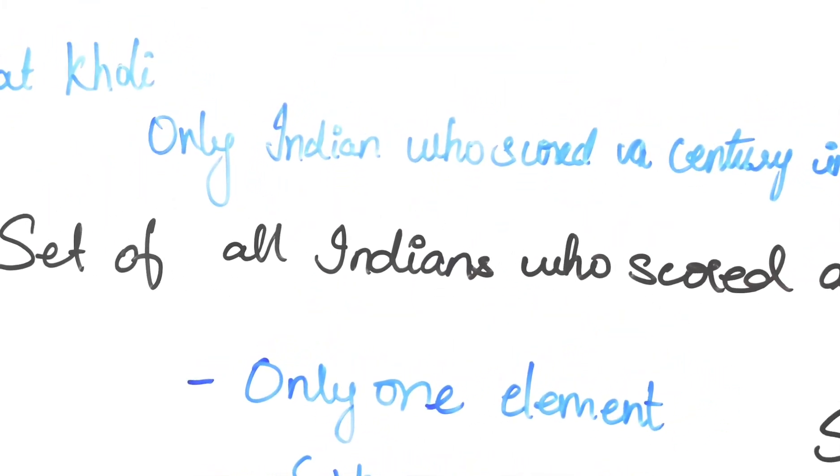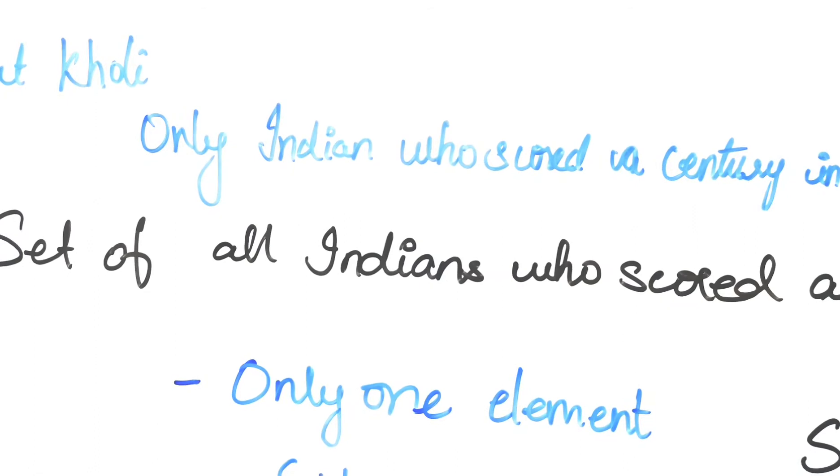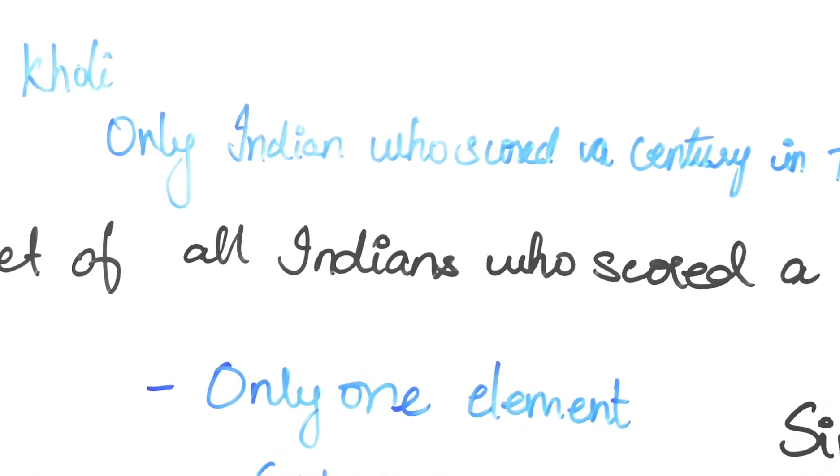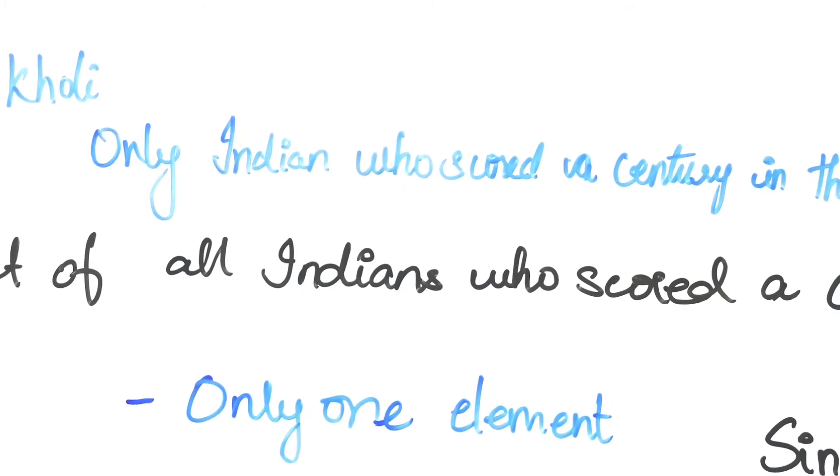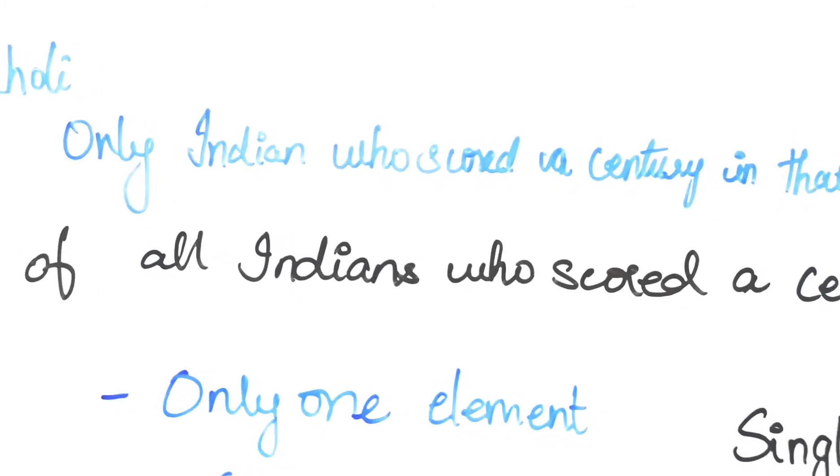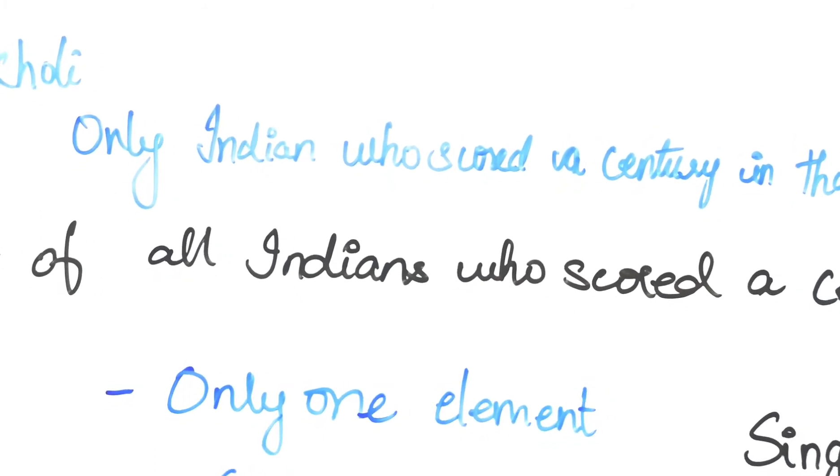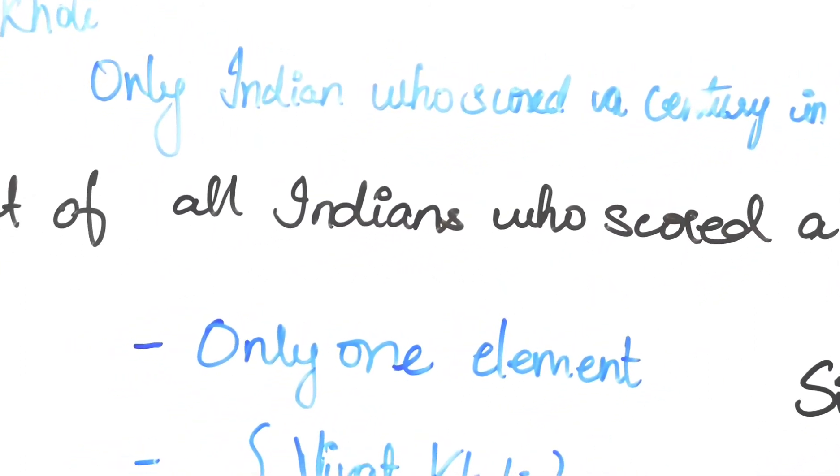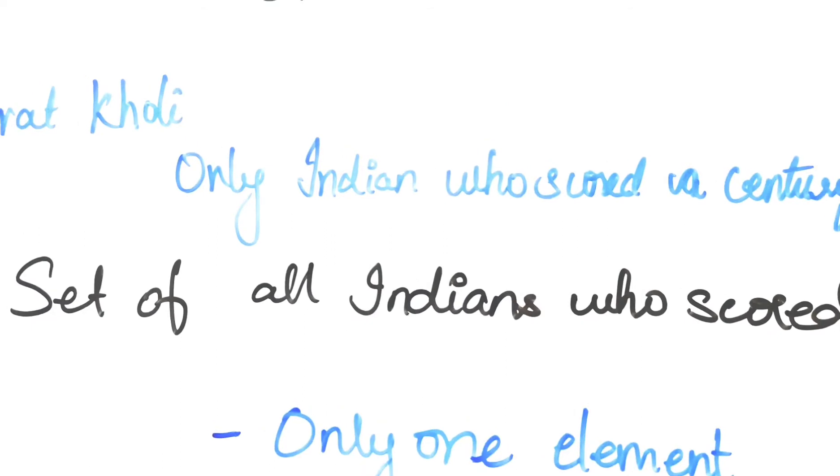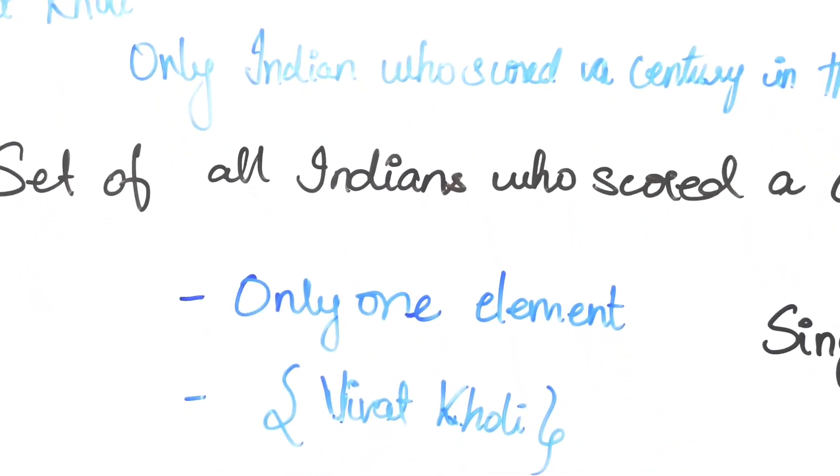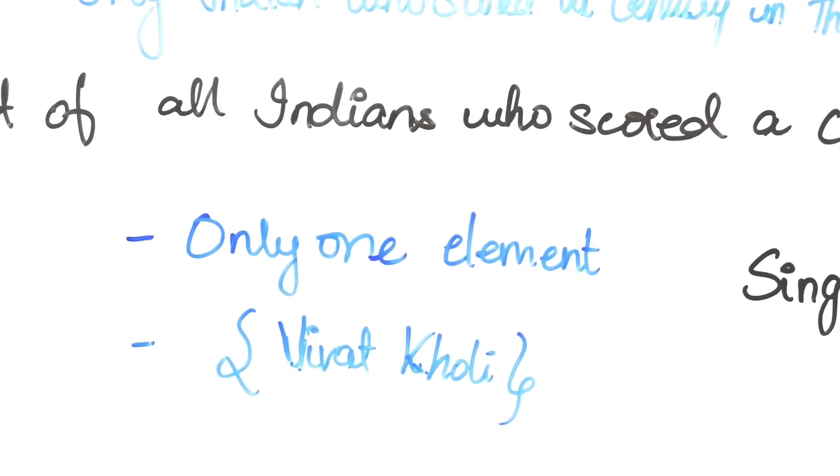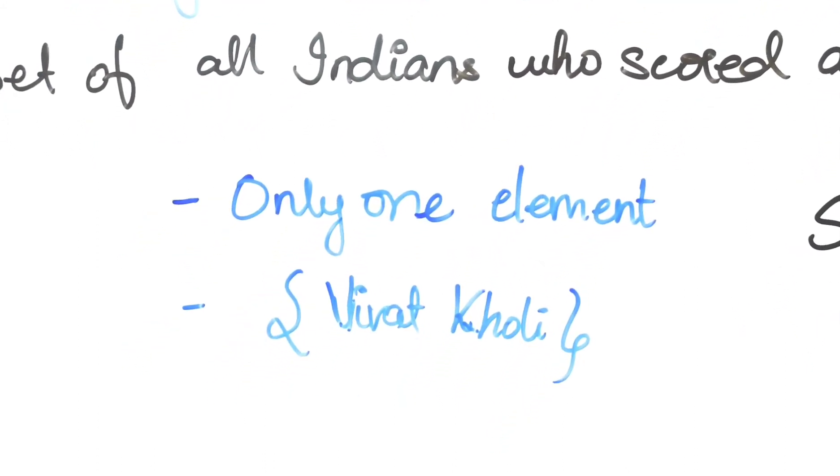When I was closely following the match between India and Pakistan, I noticed that Virat Kohli was the only Indian who scored a century in that match. So if I were to make a set of all Indians who scored a century in that match, we will have only one element in that set. That is Virat Kohli. We call such a set as singleton set, a set with one element, that is Virat Kohli.